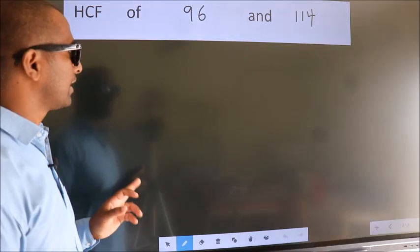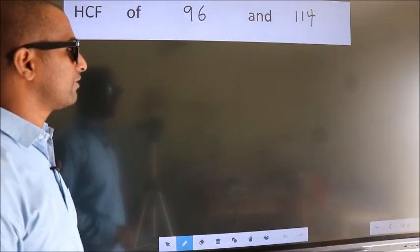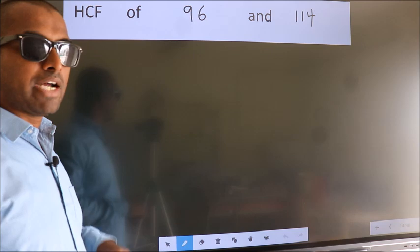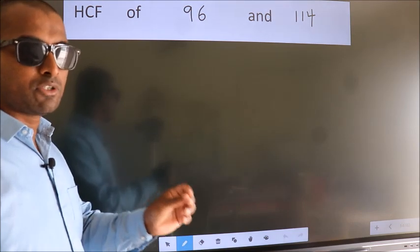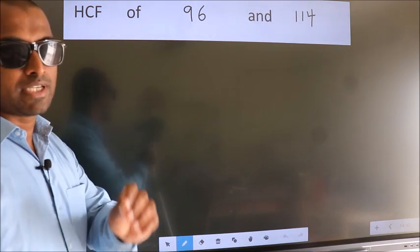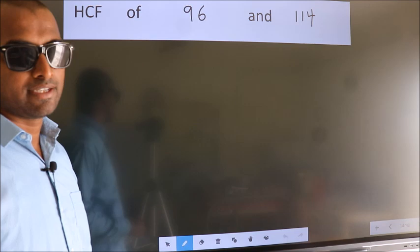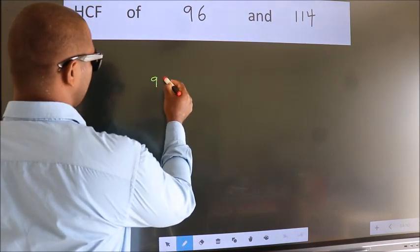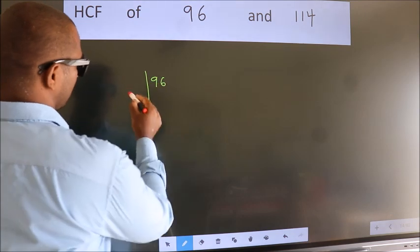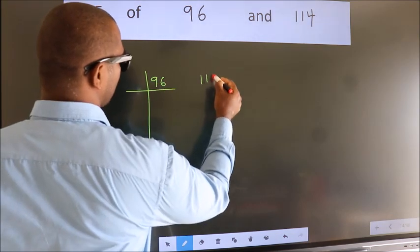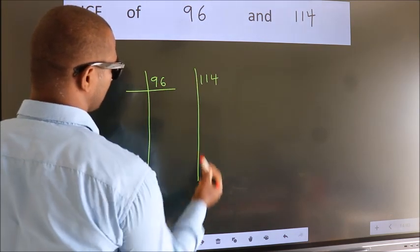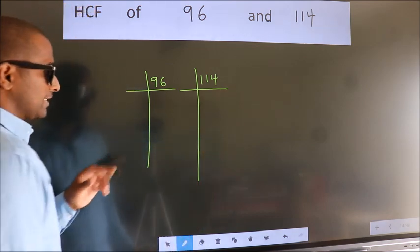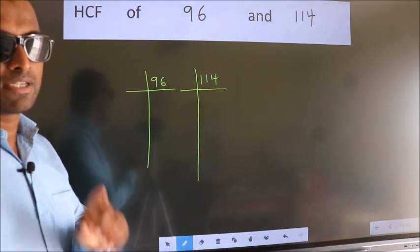HCF of 96 and 114. To find the HCF, we should do the prime factorization of each number separately. What I mean is, 96 here, 114 here. This is your step 1.